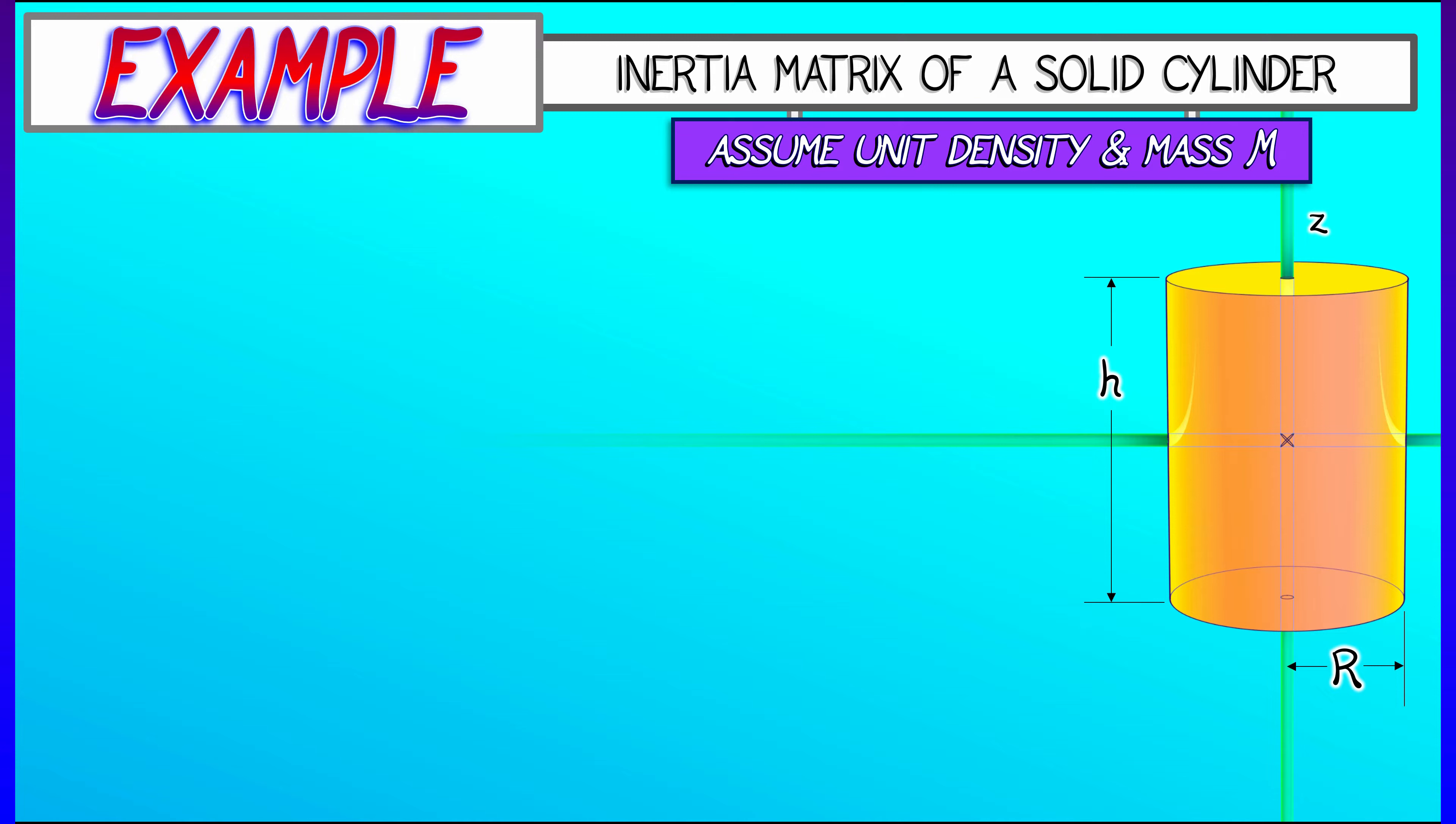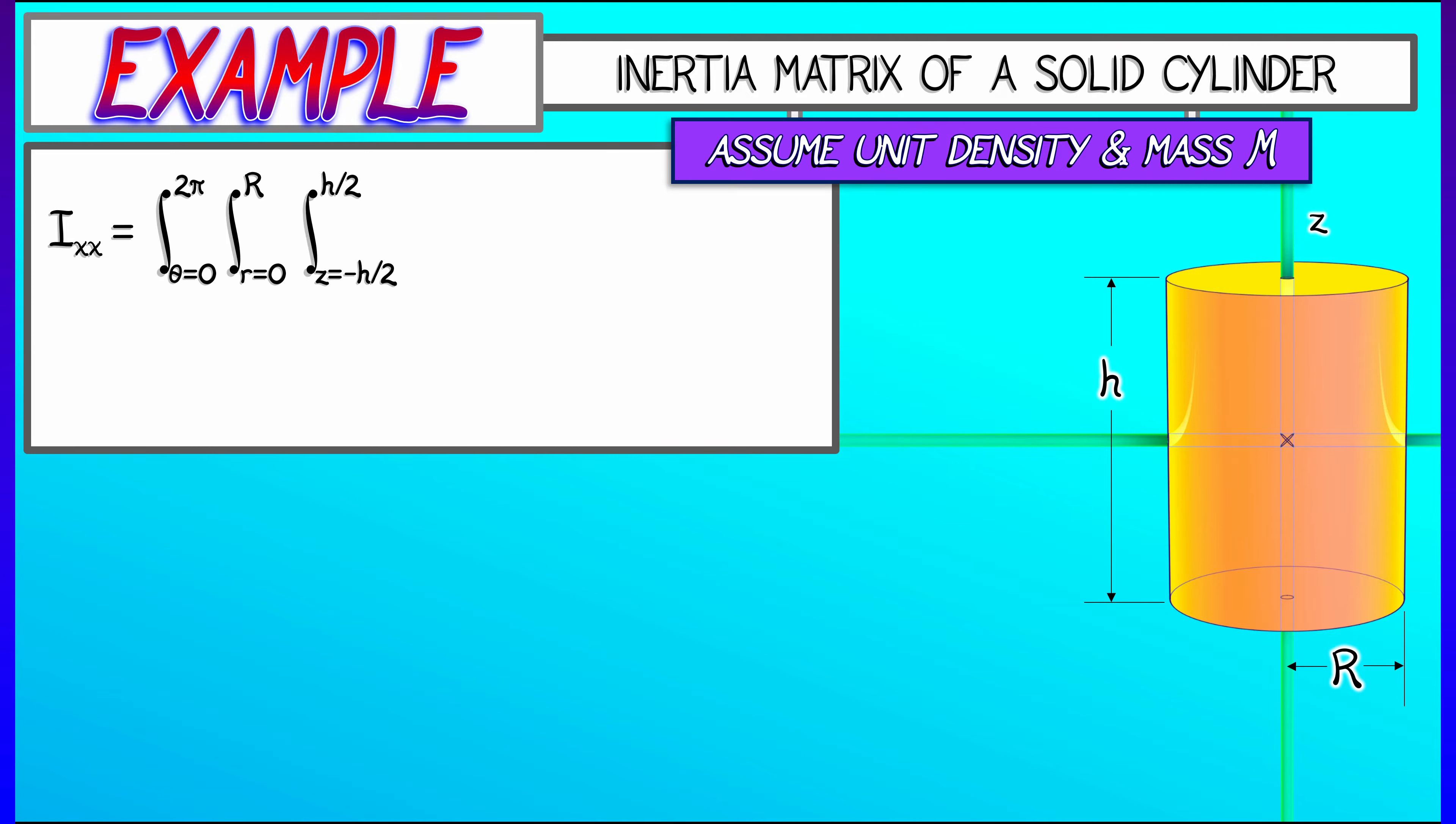To compute the moment of inertia matrix, that 3x3 matrix, we'll start with Ixx, the moment of inertia about the x-axis. This is going to be a triple integral. The limits are going to be very nice. z goes from minus h over 2 to plus h over 2, r goes from 0 to capital R, theta goes from 0 to 2 pi.